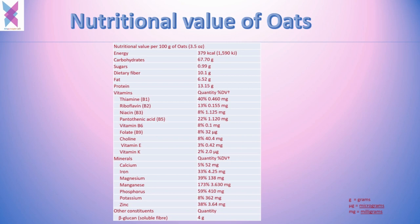For every 100 grams of oats, the nutritional value includes 379 calories of energy, 67 grams of carbohydrates, 6.5 grams of fat, and 13.15 grams of protein. Oats also contain many vitamins, with thiamine being most prominent, and minerals including iron, magnesium, and manganese in higher quantities, along with other constituents.